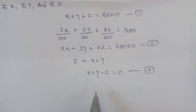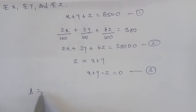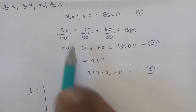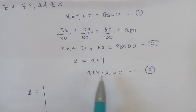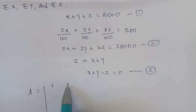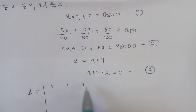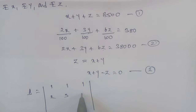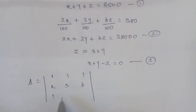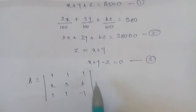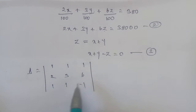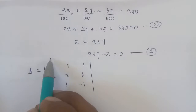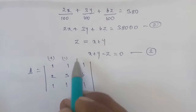To solve using Cramer's rule, we find delta, delta x, delta y, and delta z. Delta is the determinant of the coefficient matrix of x, y, and z. We apply the determinant expansion with plus, minus, plus signs along the first row.